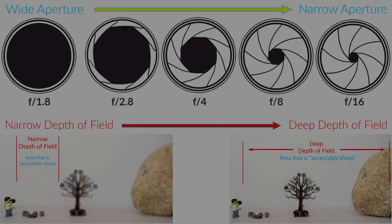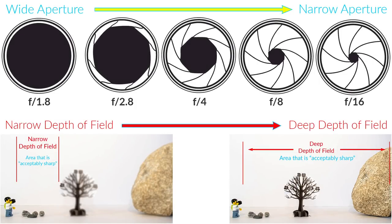Acceptably sharp actually doesn't mean tack sharp. There are methods to achieve tack sharpness throughout an entire image, such as a post-processing technique called focus stacking, and I'll review that in a future tutorial. There are three things that influence depth of field.